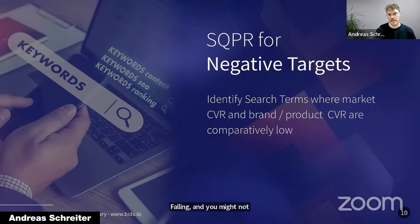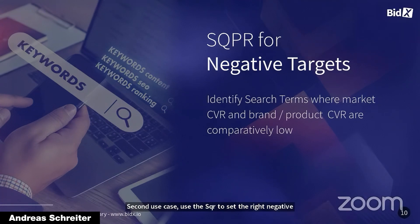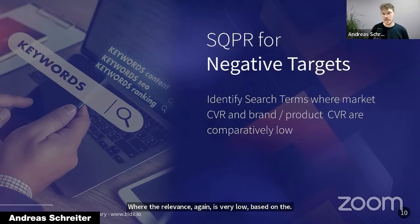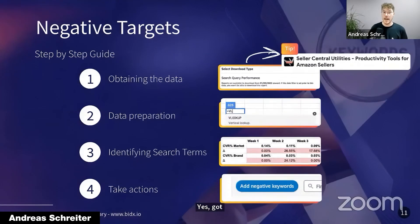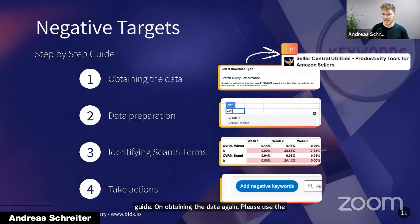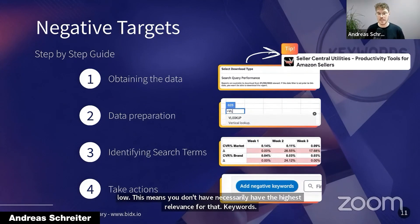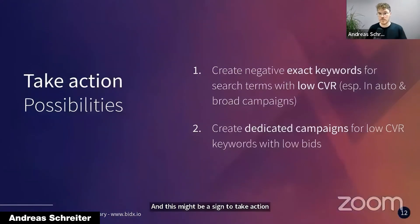Second use case: use the Search Query Performance Report to set the right negative keywords. You can identify search terms where relevance is very low — where click-through rates are comparatively low. Here again, a step-by-step guide: obtain the data using the Chrome extension, prepare the data, and identify the search terms. You can see examples on screen where conversion rates and CTR are very low. This means you don't necessarily have the highest relevance for those keywords, which may be a sign to set them as negative keywords to save costs.